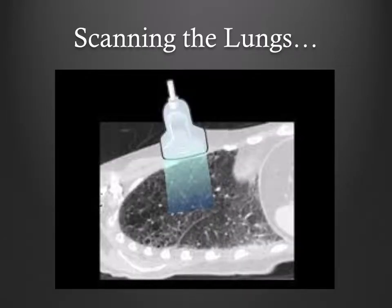Now to scanning the lungs. Lung ultrasound relies on interpretation of artifacts. Remember that air dissipates ultrasound waves. Therefore, the only visible structure in a normally aerated lung is the pleura. However, these artifacts are consistent in disease states, as we will discuss in a minute.